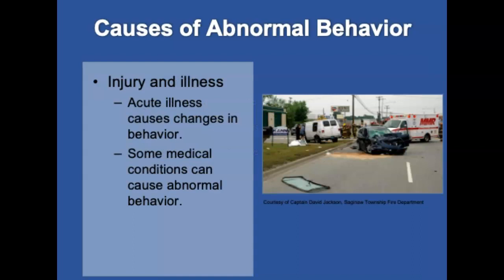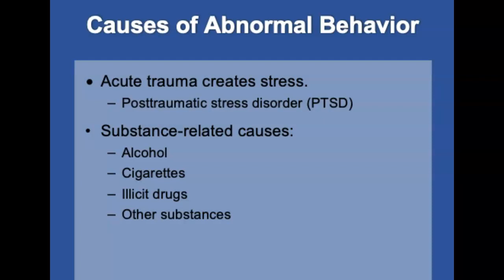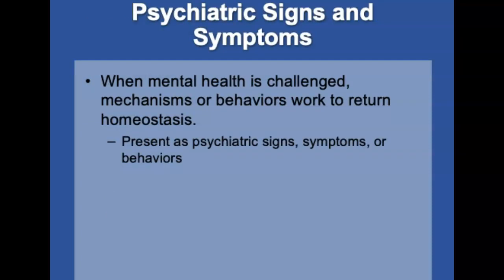Acute illness can overwhelm a person causing changes in behavior. Medical conditions that can cause abnormal behaviors include severe infections, electrolyte abnormalities, or metabolic disorders. Post-traumatic stress disorder is a severe form of anxiety stemming from traumatic exposure. Substance-related causes include alcohol, cigarettes, illicit drugs, or other substances that change the way a person feels, behaves, or thinks. When mental health is challenged, psychological mechanisms are mobilized to return the mental state to homeostasis.